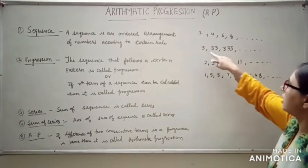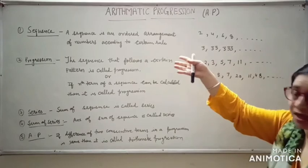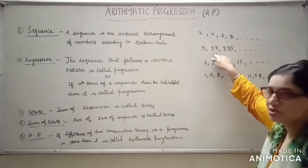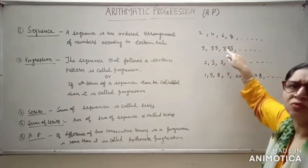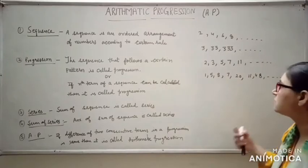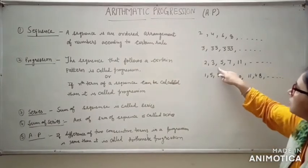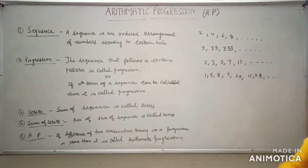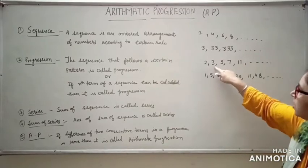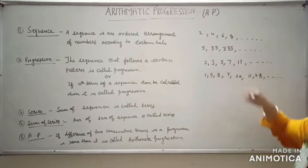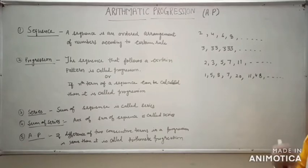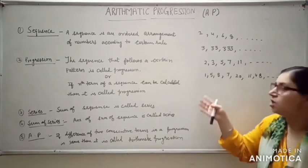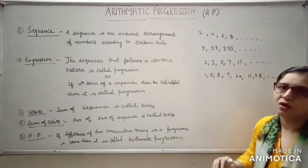Consider 2, 4, 6, 8. These are the even numbers, so there is a rule being followed here — yes, this is a sequence. Looking at the next set: 1×1, 2×3, 3×3 — a rule is followed, so this is also a sequence. Now 2, 3, 5, 7, 11 — these are prime numbers, so one rule has been followed. This is also a sequence.